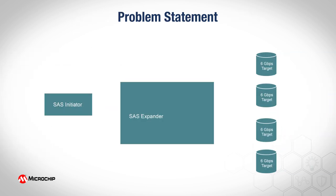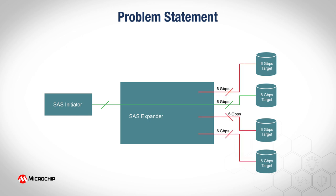The need for this technology arises due to the connection-oriented nature of the SAS protocol. An open connection between an initiator and a target owns the resulting physical pathway for the lifetime of the connection, blocking other traffic while that connection is open. A better mechanism would be to allow multiple devices to share the same physical pathway, thereby increasing overall bandwidth and reducing latency.